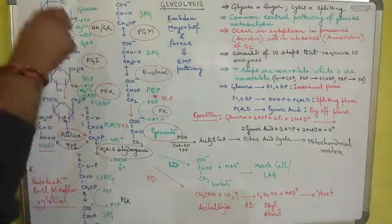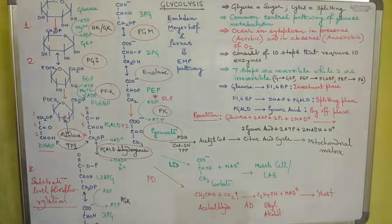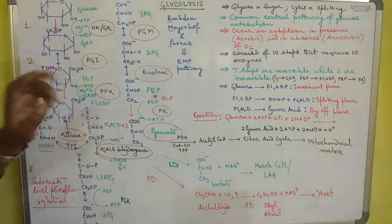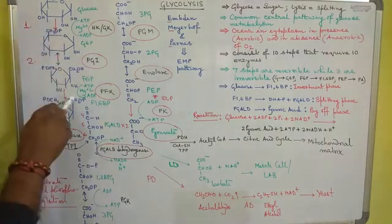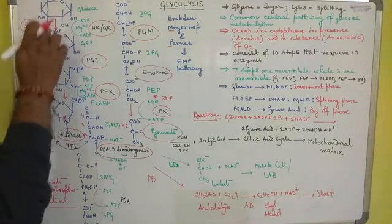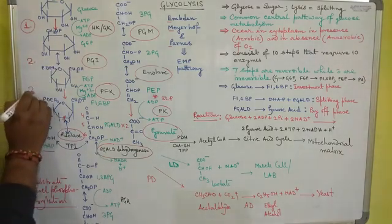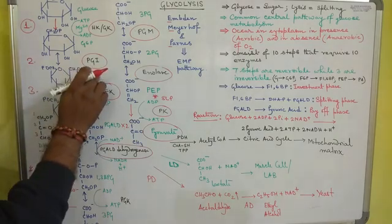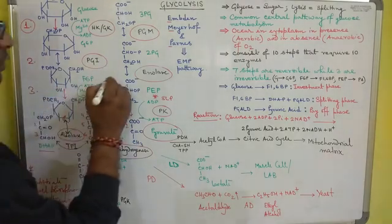Out of the 10 steps of glycolysis, 7 are reversible and 3 are irreversible. The first irreversible step is step 1, where glucose is converted into glucose 6-phosphate. The second irreversible step is step 3, where fructose 6-phosphate is converted into fructose 1,6-bisphosphate by the enzyme phosphofructokinase. These three irreversible steps and their regulatory enzymes will be discussed during the regulation of the glycolytic pathway.